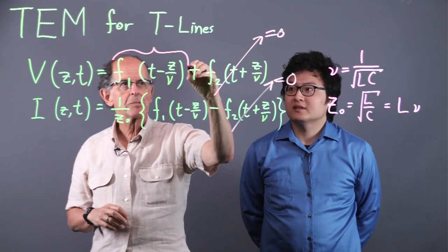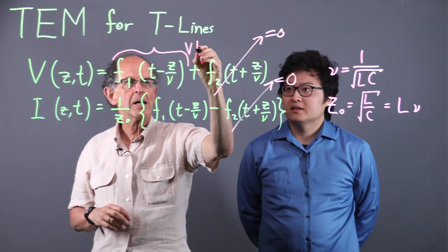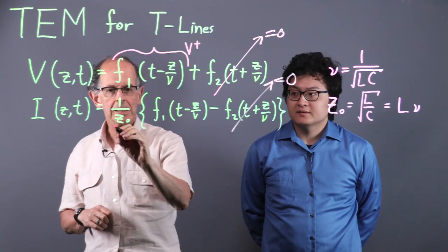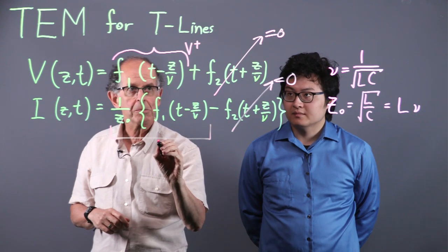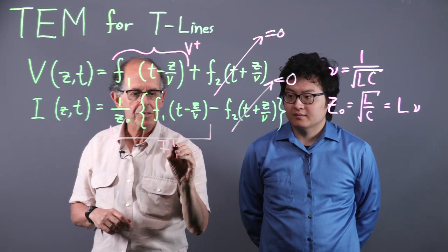So in summary, that's absolutely right. We call this V-plus, the wave going to the right. And this piece with the Z-naught, so I'll write it like that, is going to be I-plus.